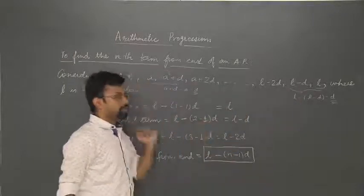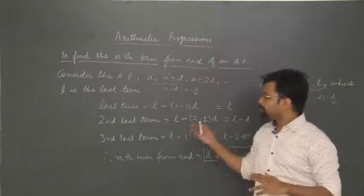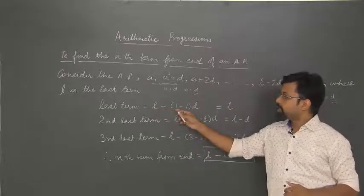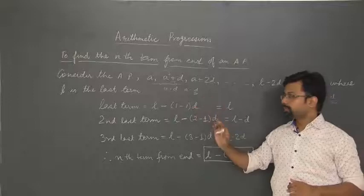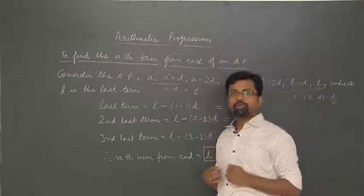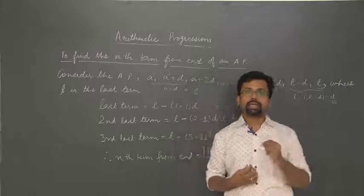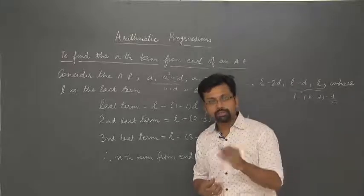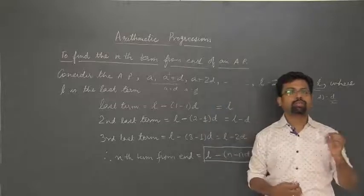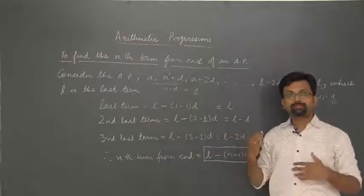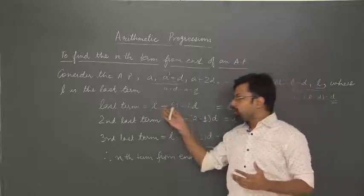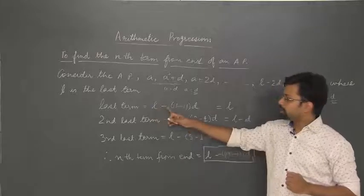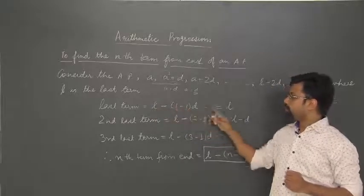We have an AP in this form. The last term can be written as L, or L minus (1 minus 1) into D. If you recall how we wrote the nth term from the beginning, we wrote it as A_N equal to A plus (N minus 1) into D. Similarly, we try to formulate a formula with respect to the last term and the common difference. The last term is L minus (1 minus 1) into D — that's L.